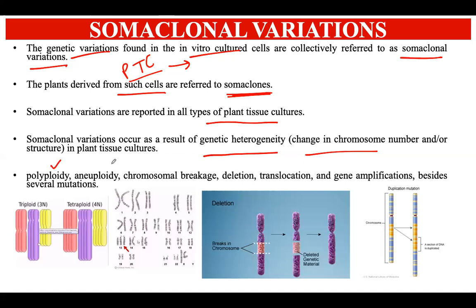This genetic heterogeneity has different causes, such as polyploidy, aneuploidy, chromosomal breakage, deletion, translocation, gene amplification, and various mutations. Polyploidy means a change in the number of alleles inside the genetic material. Aneuploidy is a variation in one specific chromosome within the chromosome set. There can also be chromosomal breakage, deletion of specific DNA segments, translocation of genes, gene multiplication, and other mutations like deletions and additions.